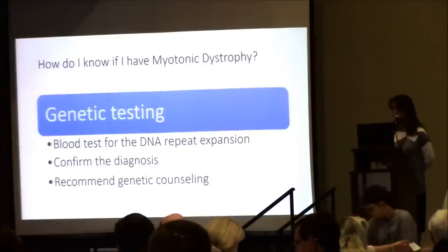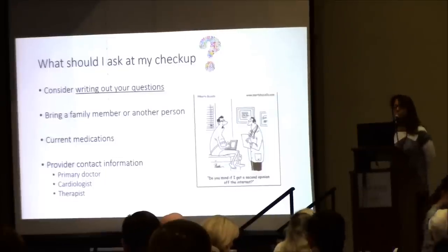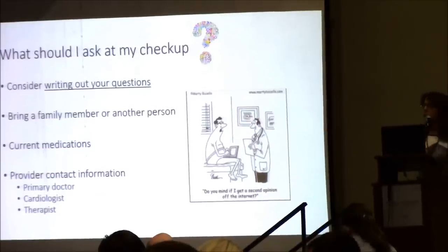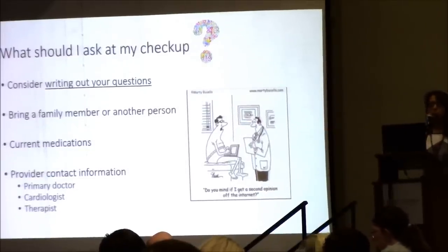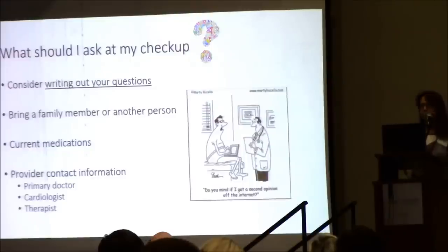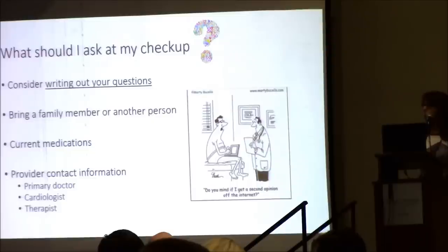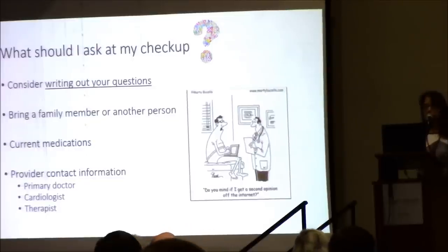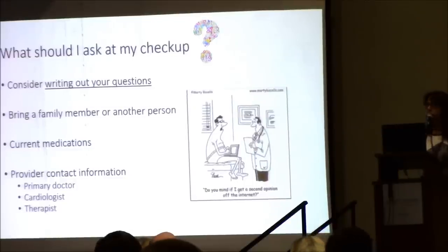When you go to the clinic, consider writing your questions down beforehand — visits can be distracting, and if some questions are embarrassing, such as about your GI tract or falling asleep at the wheel, it helps to have them written. I also recommend bringing another family member if possible — another set of ears to help absorb the medical information. Bring your current medicines to make sure they're compatible with myotonic dystrophy, as well as names and contact information for your other doctors, so your care team can work together.